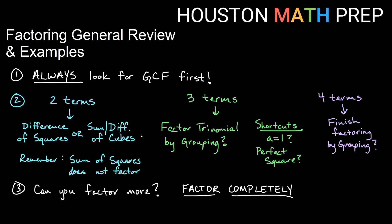Remember that the first thing you will always do is look for greatest common factor. That's a quick way to simplify and then look at what you have left. Remember once you pull out greatest common factor, you want to — after every step of factoring — look at what you have remaining and see if anything else can be done to factor completely, as exams or assignments will probably say.